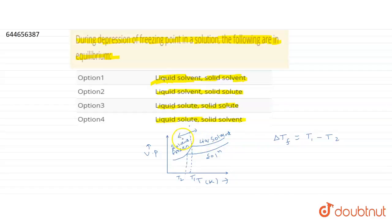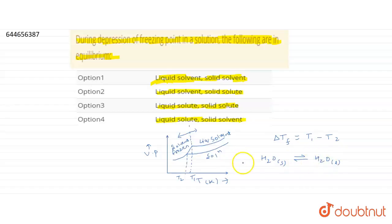As you can see on the graph, here the frozen solvent — that is, solid solvent — and liquid solvent are in equilibrium. If the solvent is H2O, there will be equilibrium like this: H2O solid converting to H2O liquid. So there will be equilibrium between water in solid state and water in liquid state — that is, liquid solvent and solid solvent are in equilibrium.